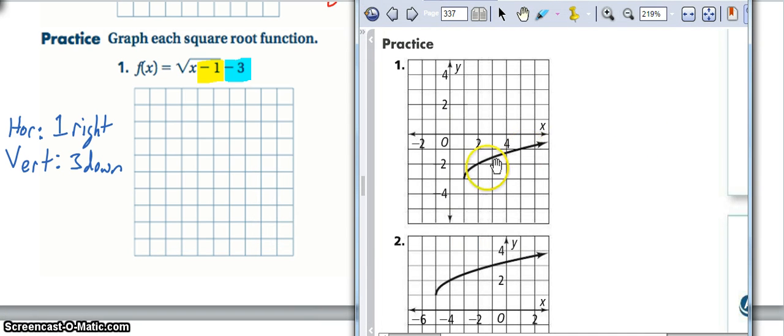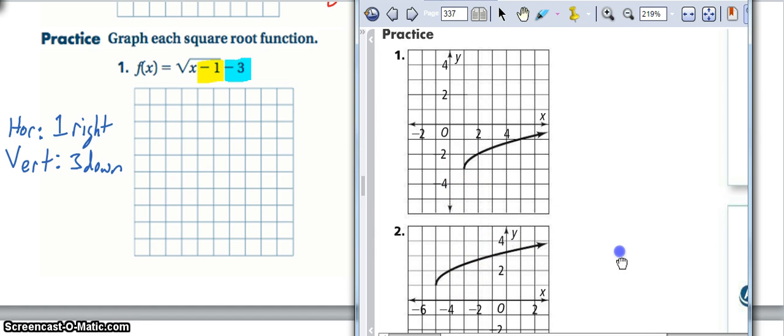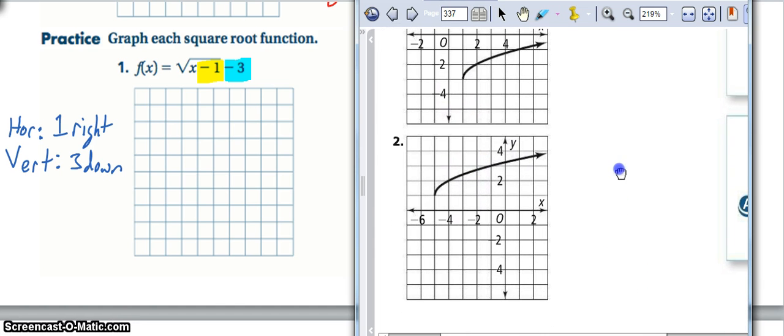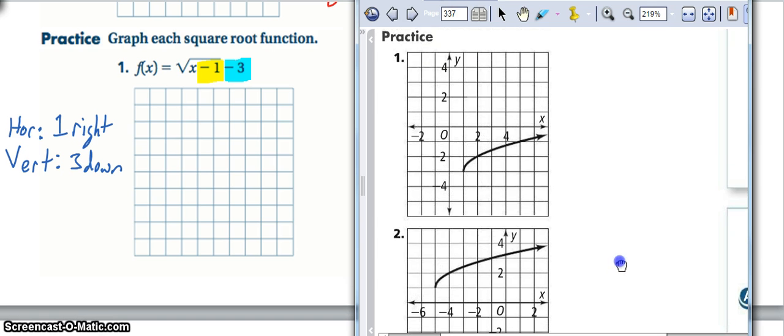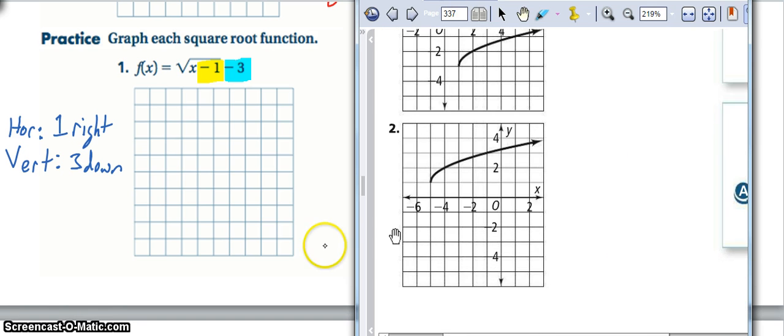There would be the graph for number 1, showing that we went to the right 1 and down 3. And then the graph for number 2, we went to the left 5, and up 1. Make sure that that makes sense for you, and then work through the Pearson module for problem 2.